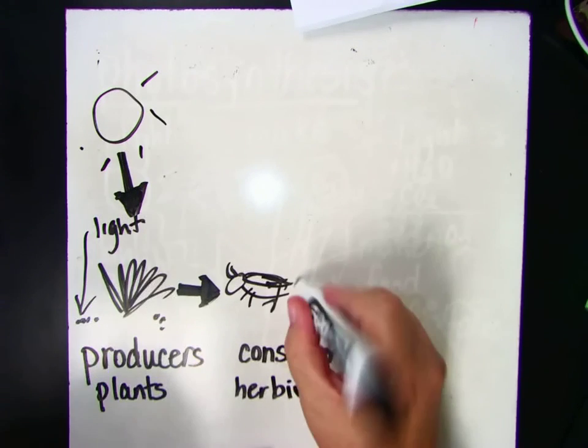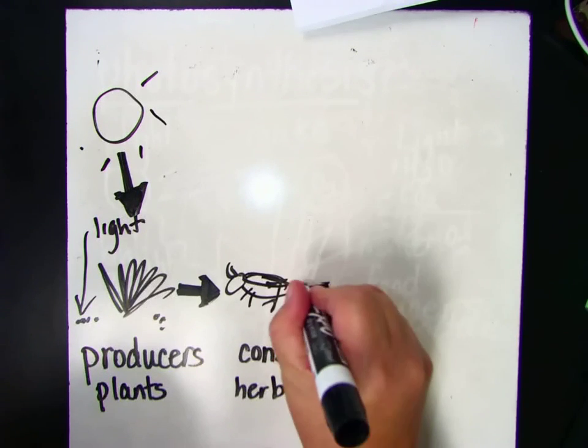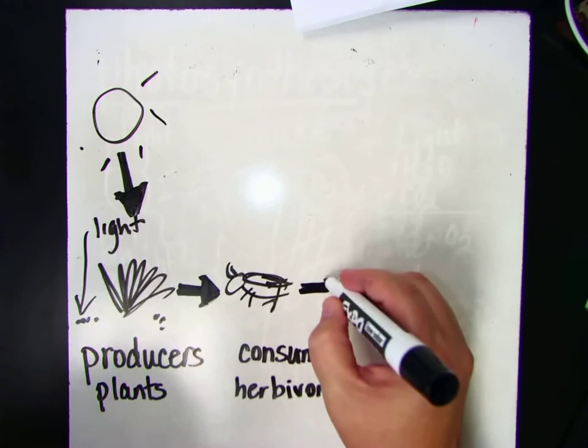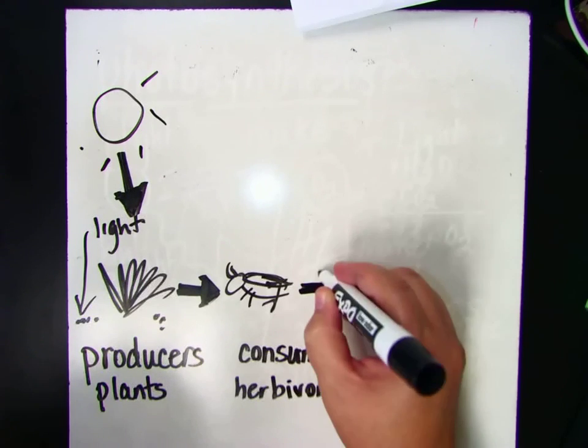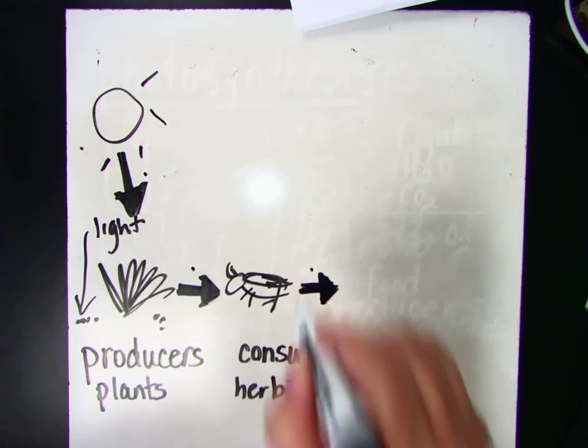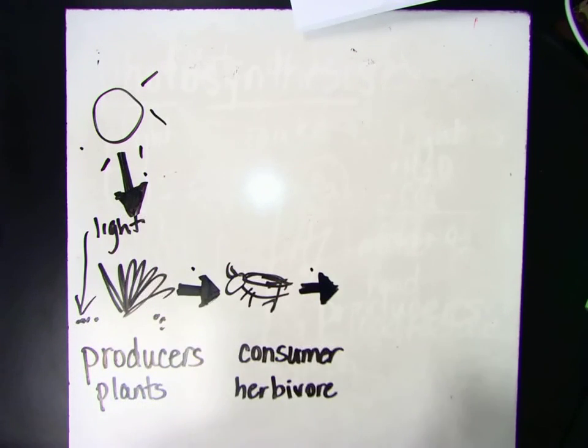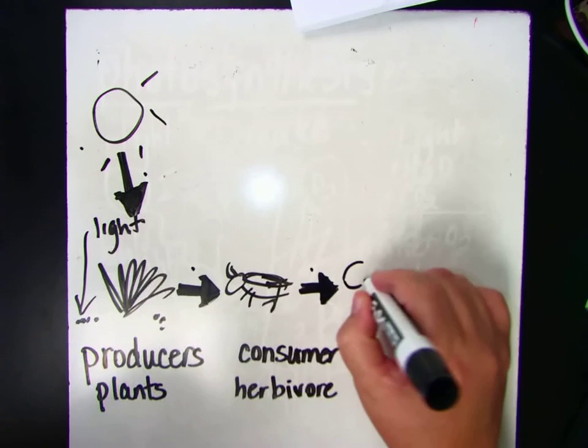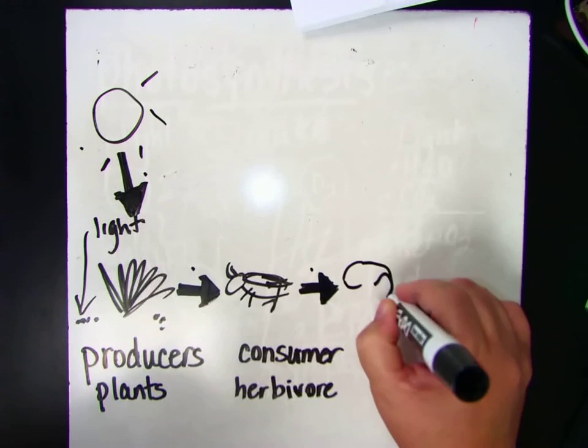Okay, I'm going to move on. The organism that eats the cricket gets energy from it, so we're transferring energy again. If you notice, energy transfer, energy transfer, energy transfer. And we'll transfer energy this time to, let's say, a frog.